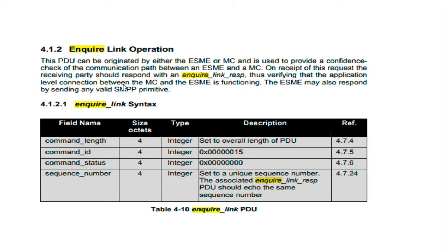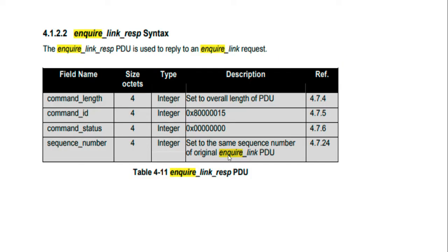Let's look at the structure of the enquire link message. The command length field is four bytes — this is the total length of the entire message. The command ID is also a four-byte integer, which is the static number allocated by the standards for the enquire link. Then there is the command status, which is not used here, and the sequence number, which is also four bytes.